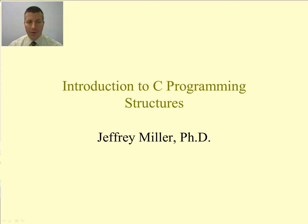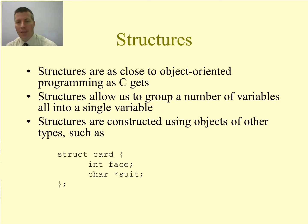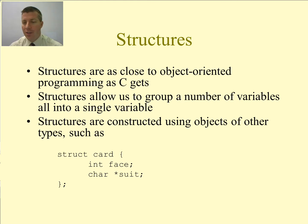Welcome to Intro to C Programming. Today we are going to move into some different technologies called structures. Structures are as close to object-oriented programming as C gets. In other languages like C++ and Java, we have classes, and classes are related to structures. Structures are just a primitive form of them. What structures allow us to do is to group a number of variables all into a single variable.